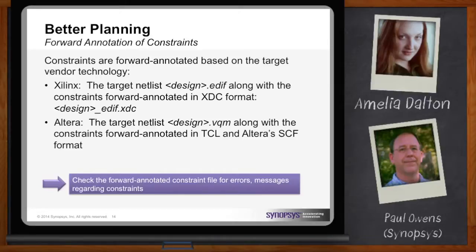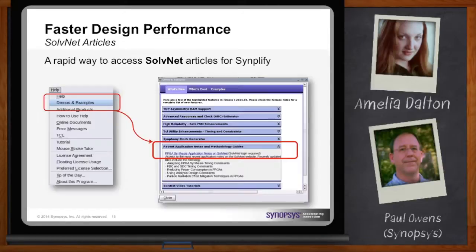How do I keep all this information straight? A good thing is to make sure you have a SolveNet account, and you want to go to SolveNet to find all sorts of articles on using the Simplify tool. For example, if you use the pull-down menu, we have a demos and examples pop-up that shows things like recent application notes, taking you right to a repository of all sorts of application notes on timing and constraints.